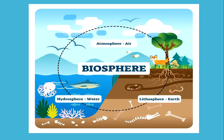As you can see in the diagram, there is the atmosphere, which means air — containing gases like carbon dioxide, nitrogen, and oxygen. Then there is the hydrosphere, which means water, and the lithosphere, which means Earth. This whole circle is the biosphere where life exists, whether it is humans, plants, or animals.